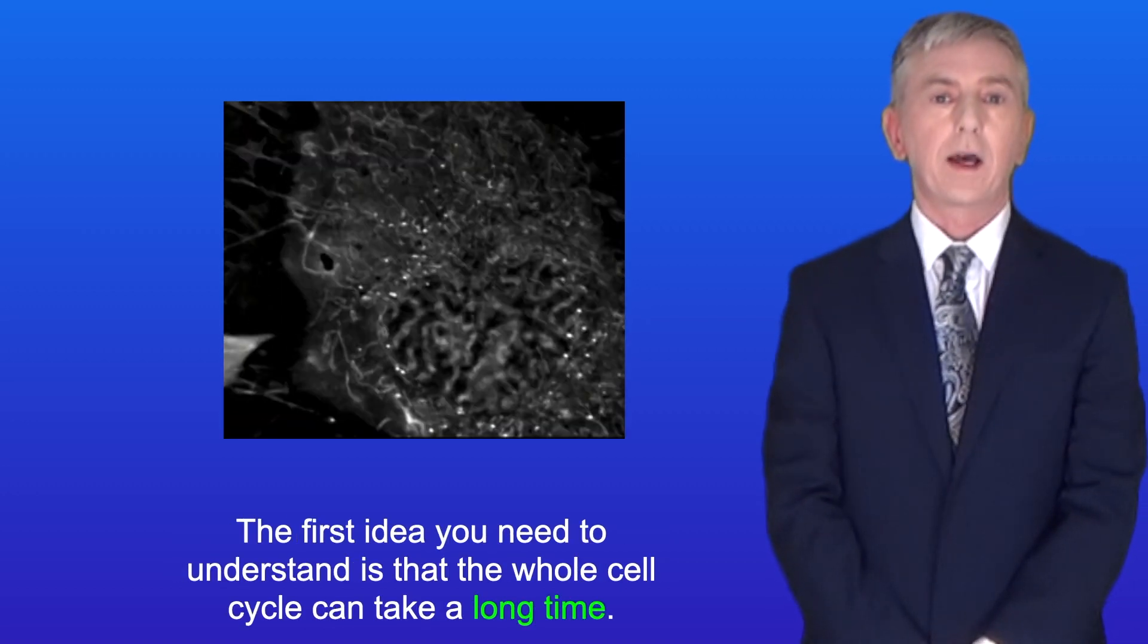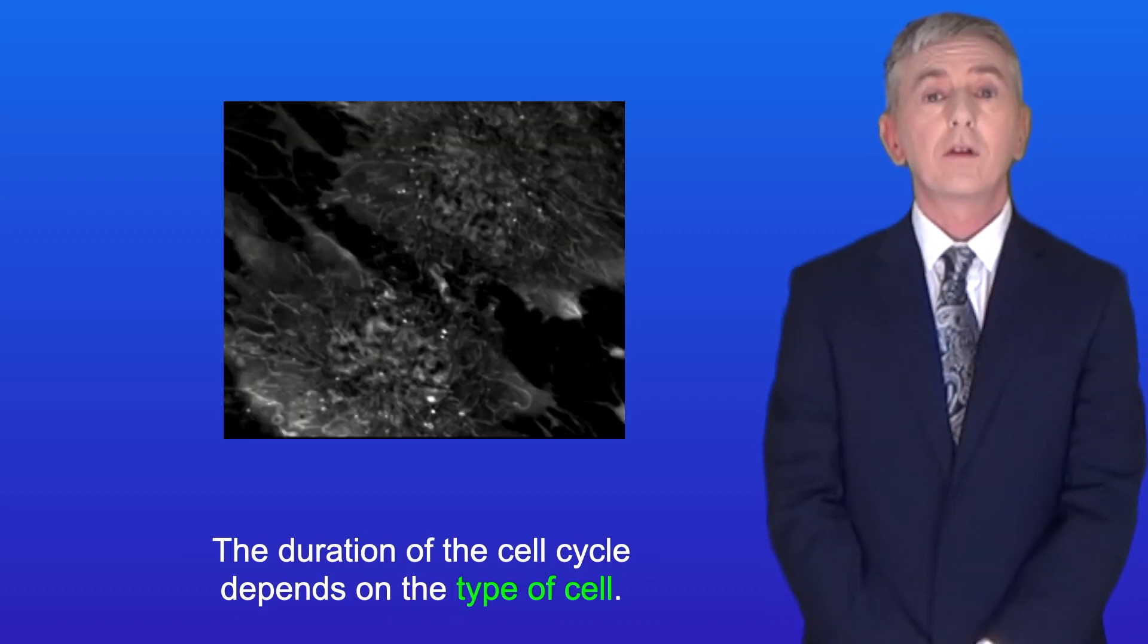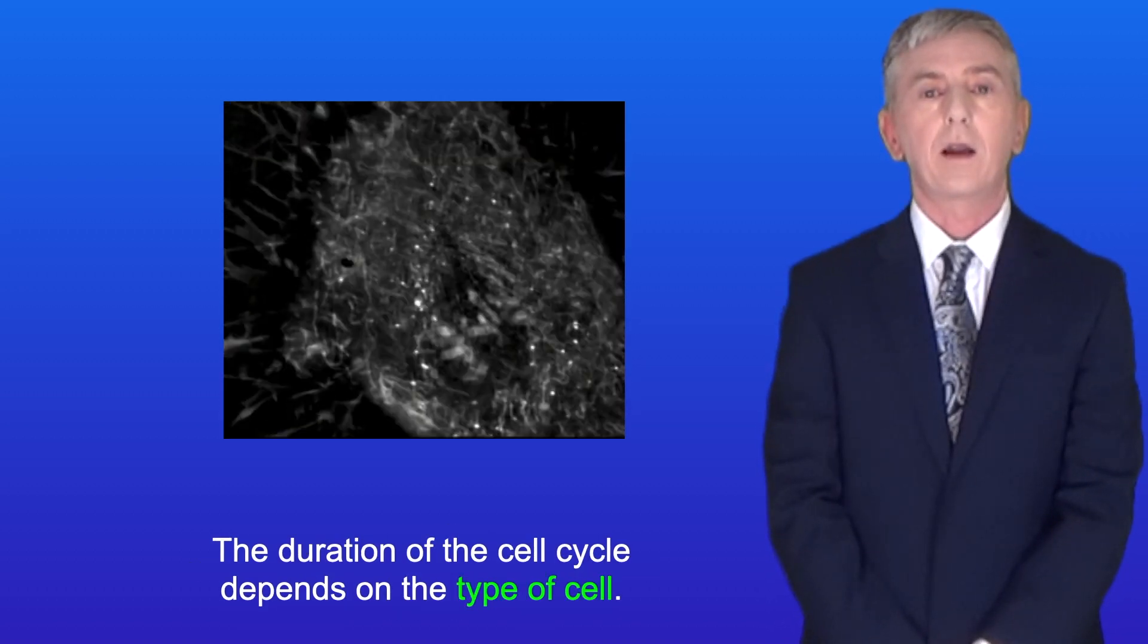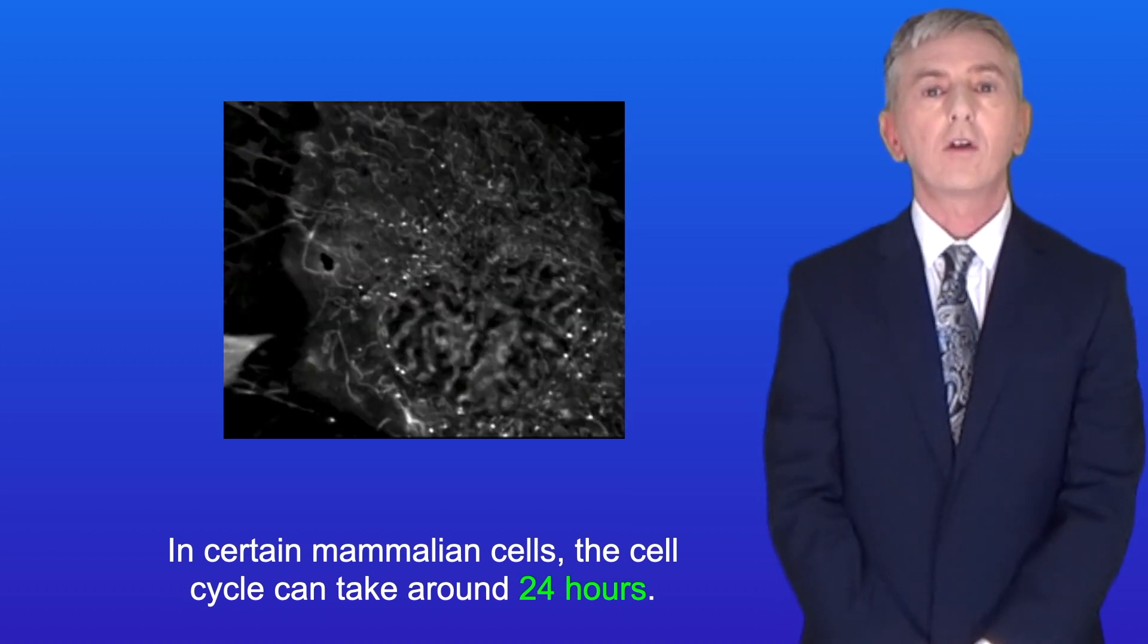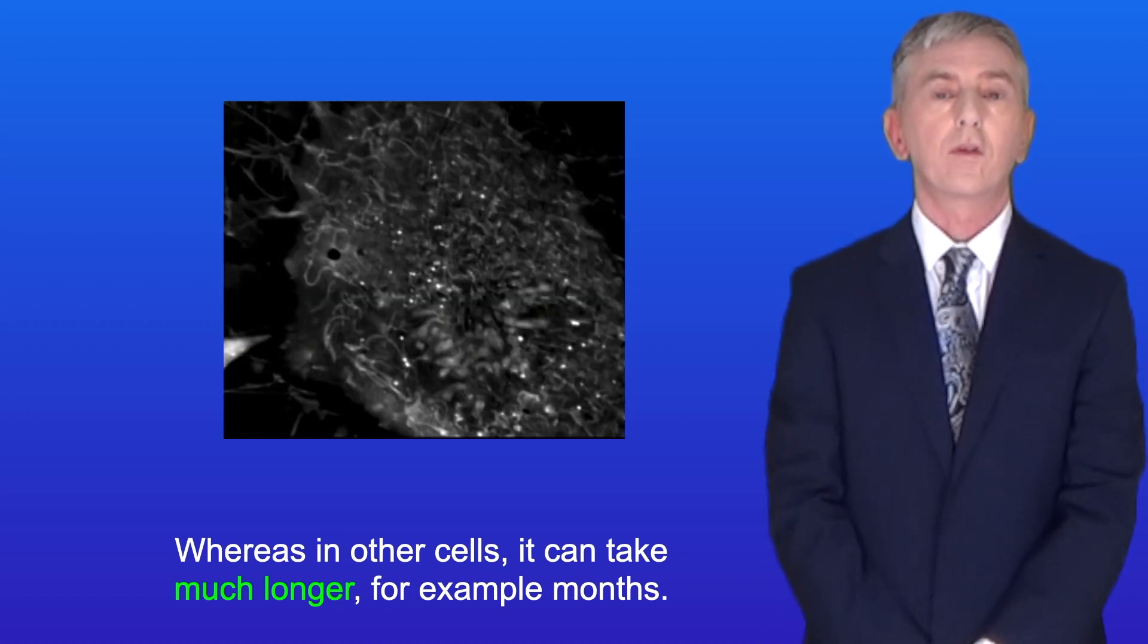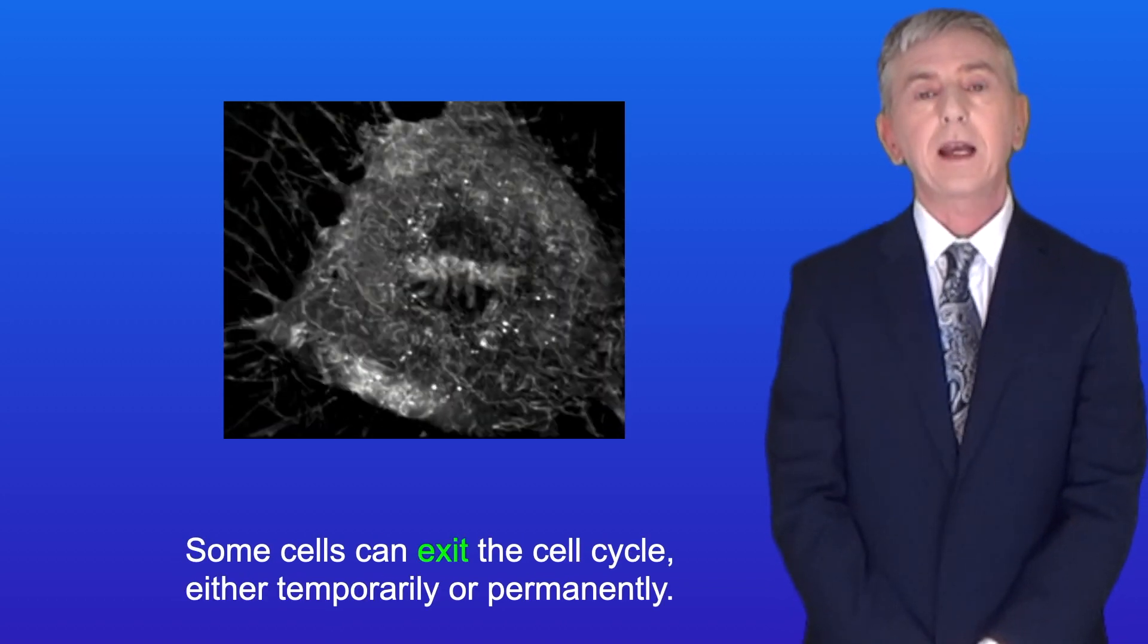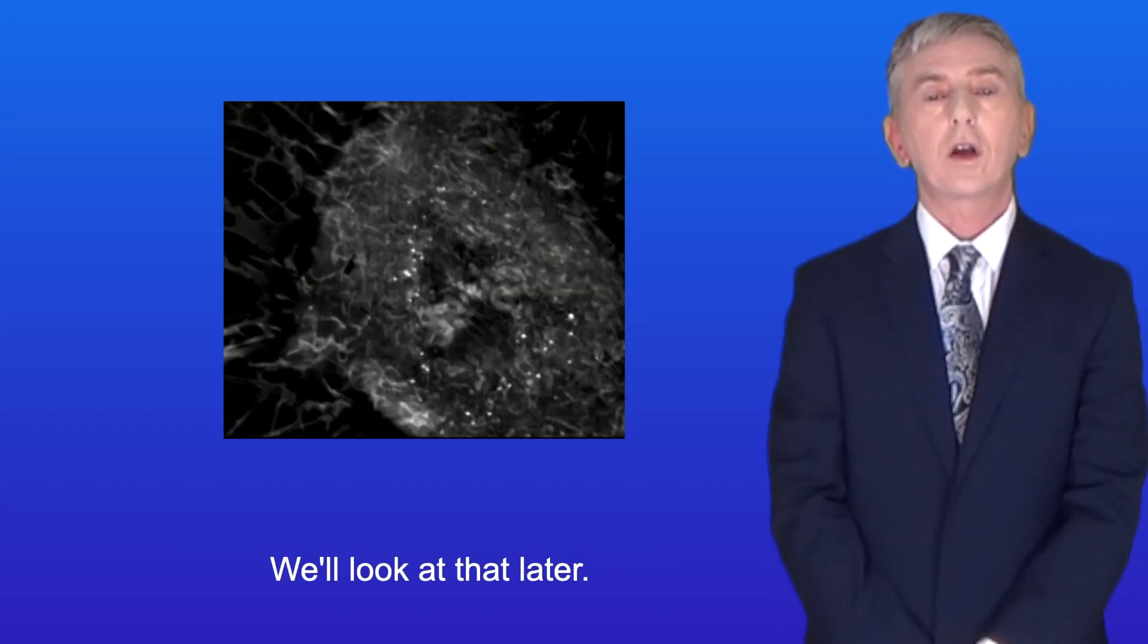The first idea you need to understand is that the whole cell cycle can take a long time and the duration depends on the type of cell. In certain mammalian cells the cell cycle can take around 24 hours, whereas in other cells it can take much longer, for example months. Some cells can exit the cell cycle either temporarily or permanently and we look at that later.